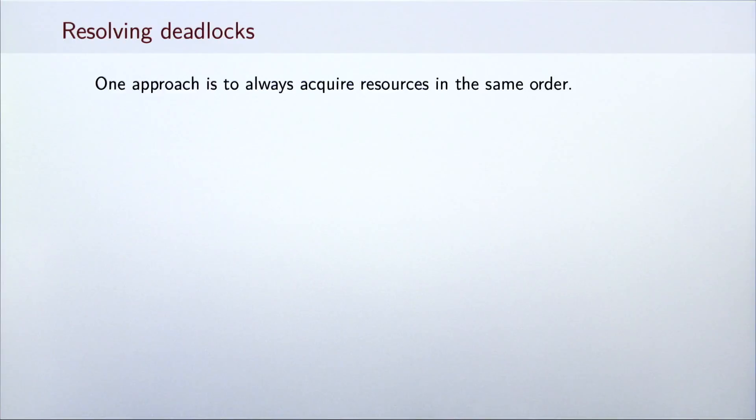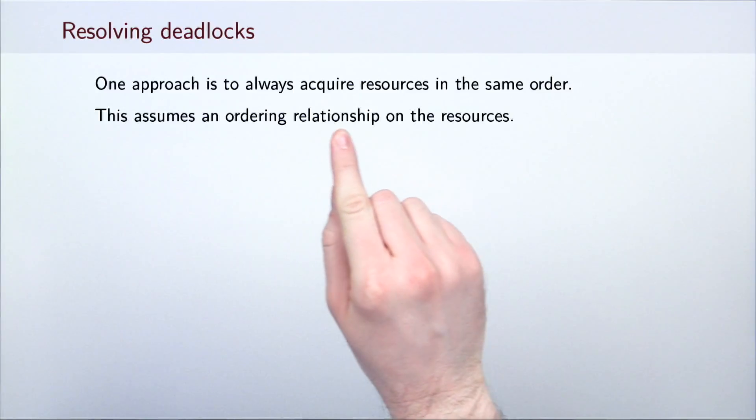So how can we fight deadlocks? One way to do this is to ensure that resources, in our case monitor ownerships, are required in the same order. Doing so eliminates the possibility that two threads get mutually blocked on each other's resources. This approach assumes that we can order different resources in some way. How can we do that in the case of account objects?